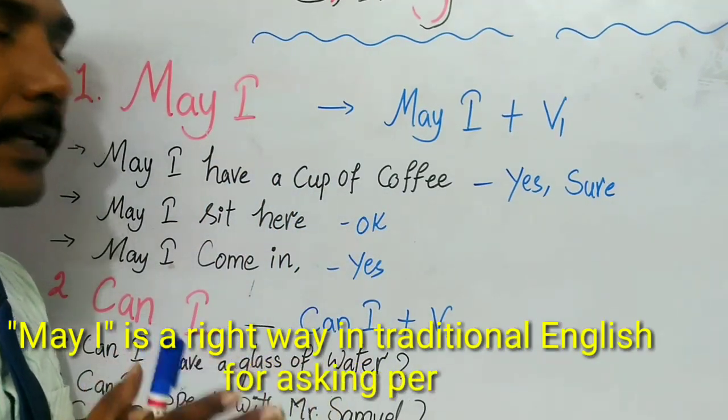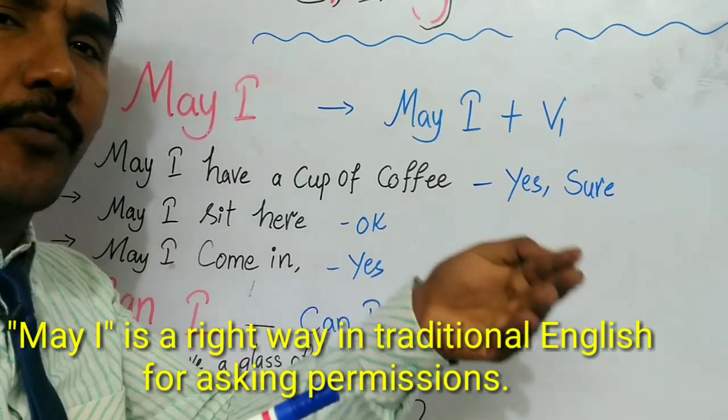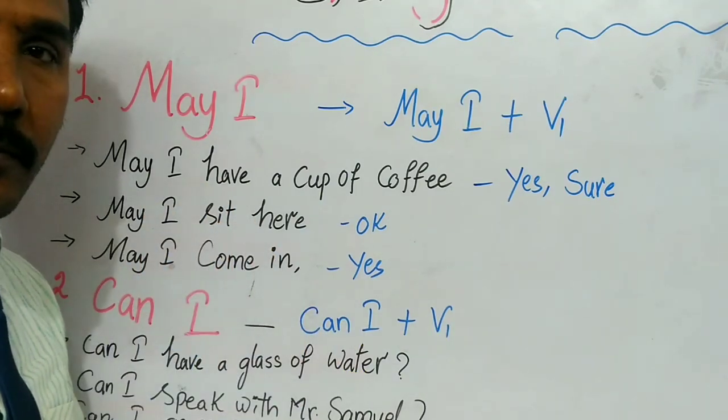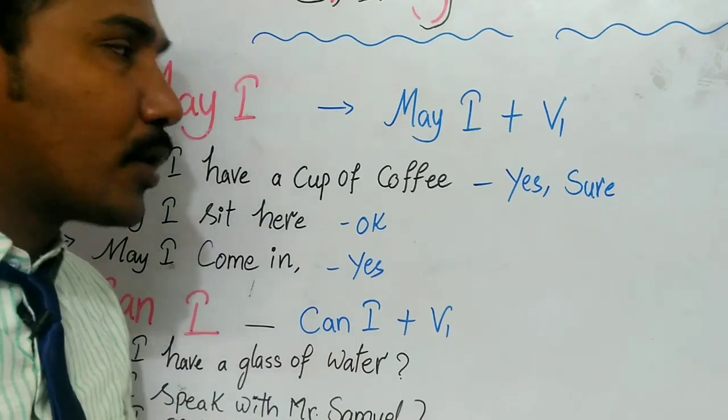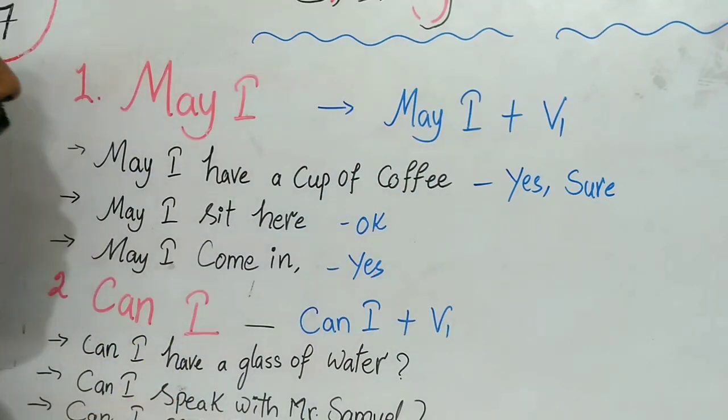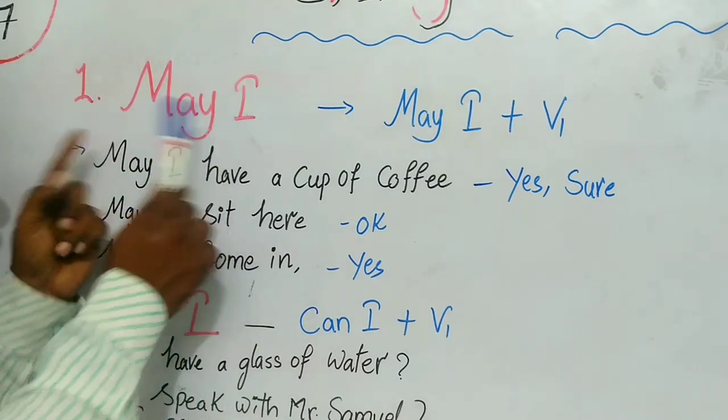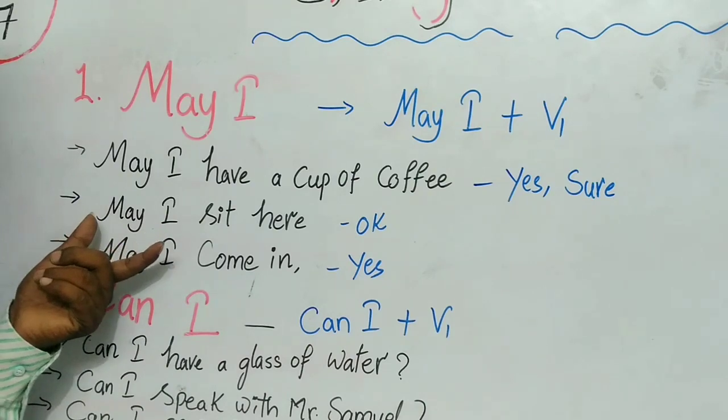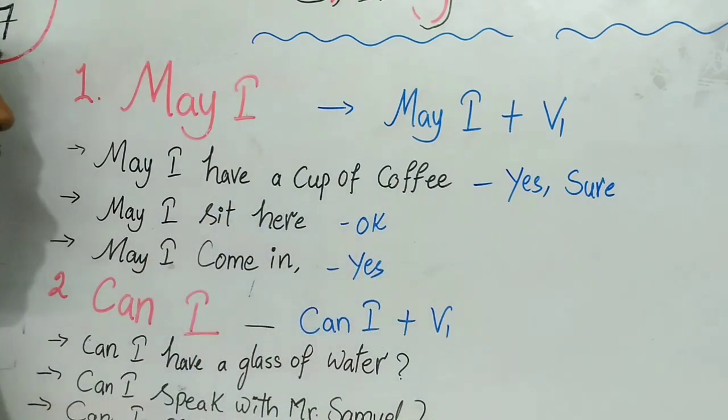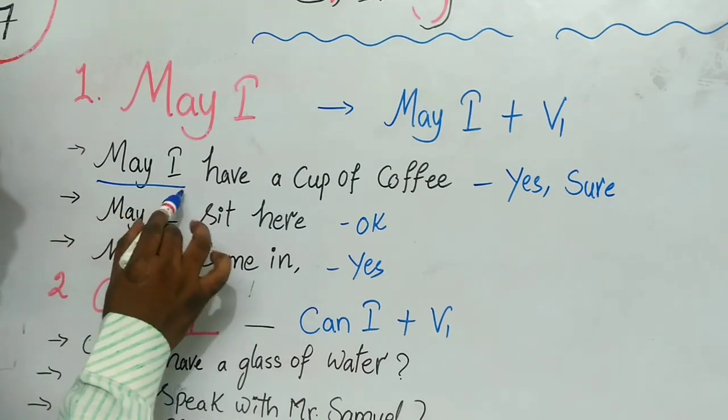May I - this is the first permission method. I think May I is a traditional way to ask any kind of permission. It should be very meaningful and very polite. This is a traditional way to ask for permission in any situation. How do we use May I? For example: May I have a cup of coffee?